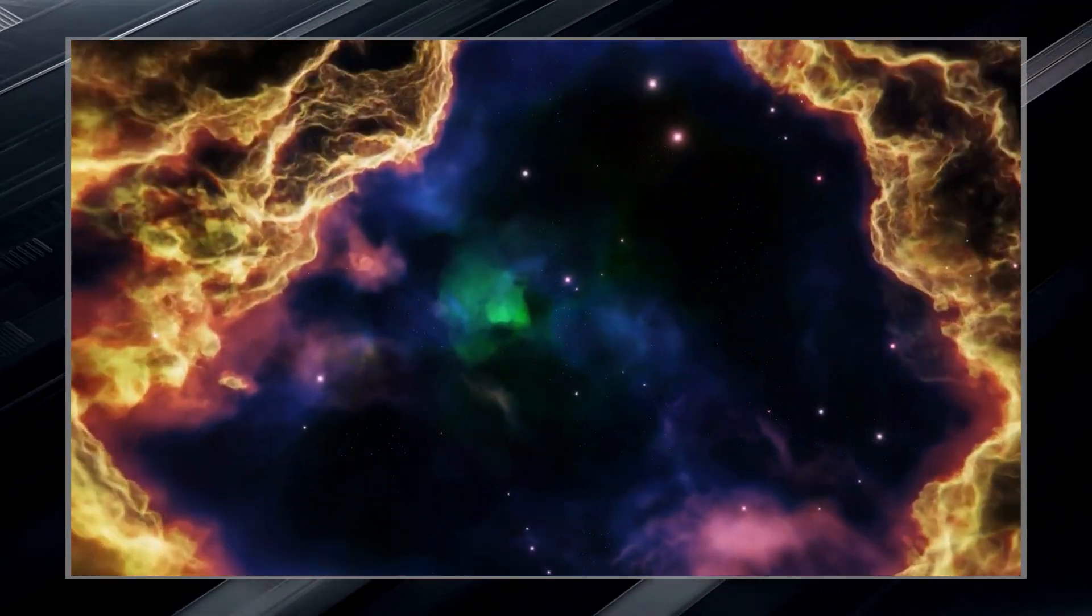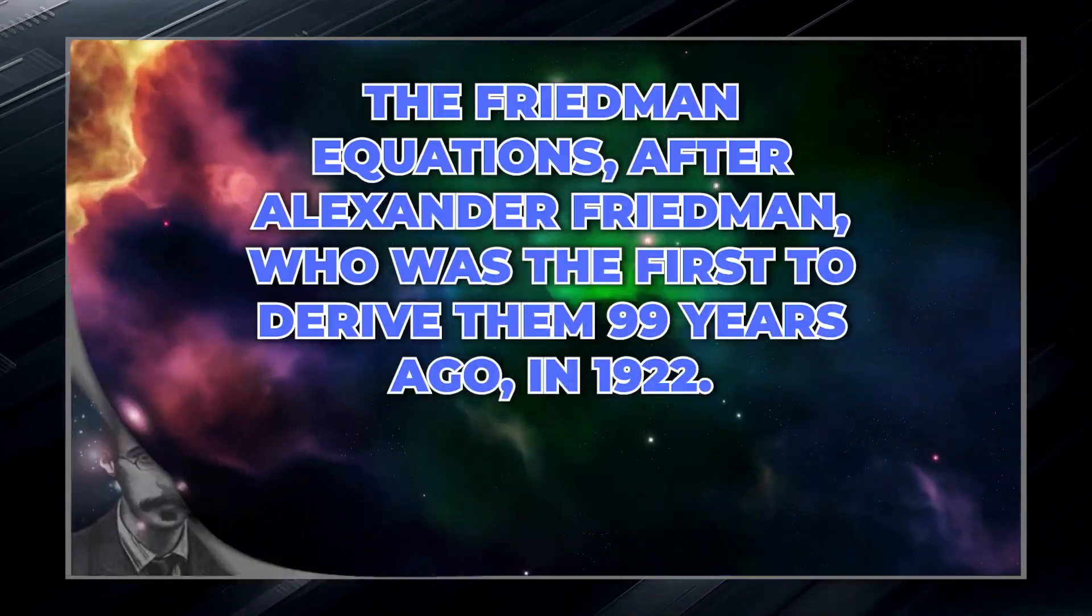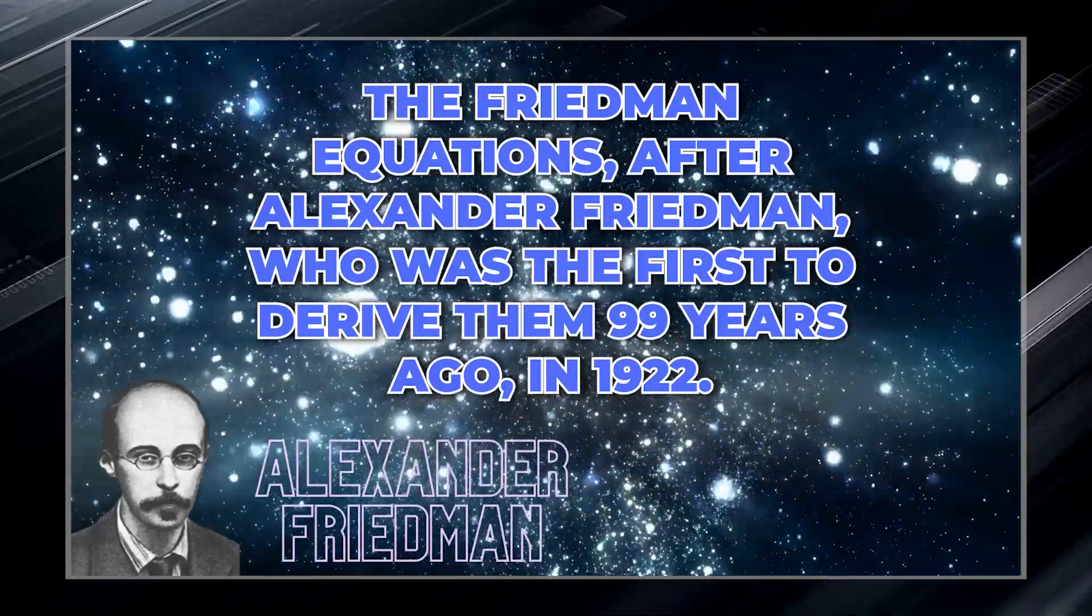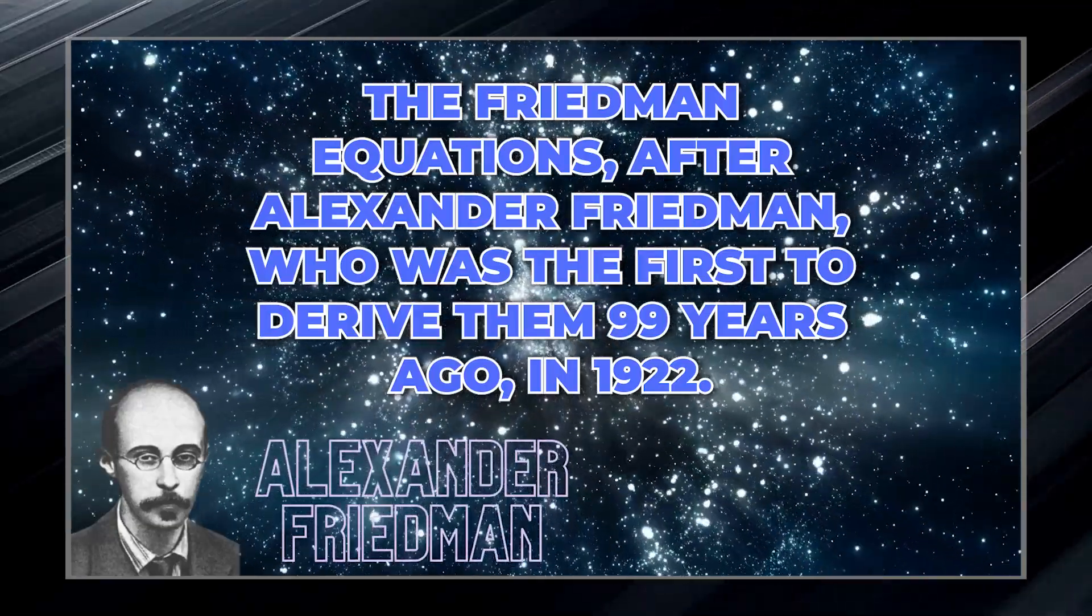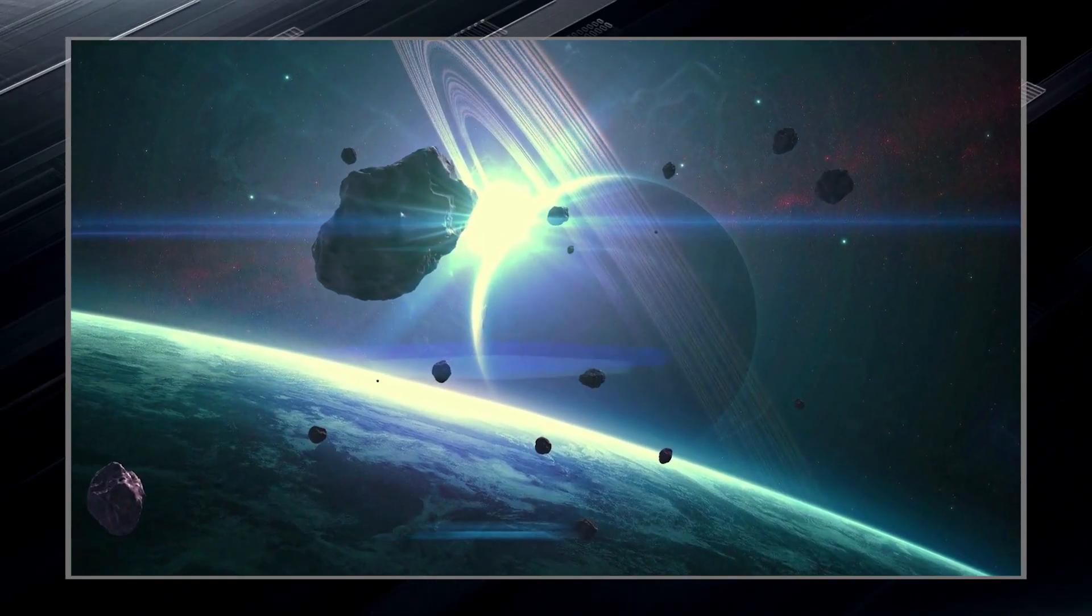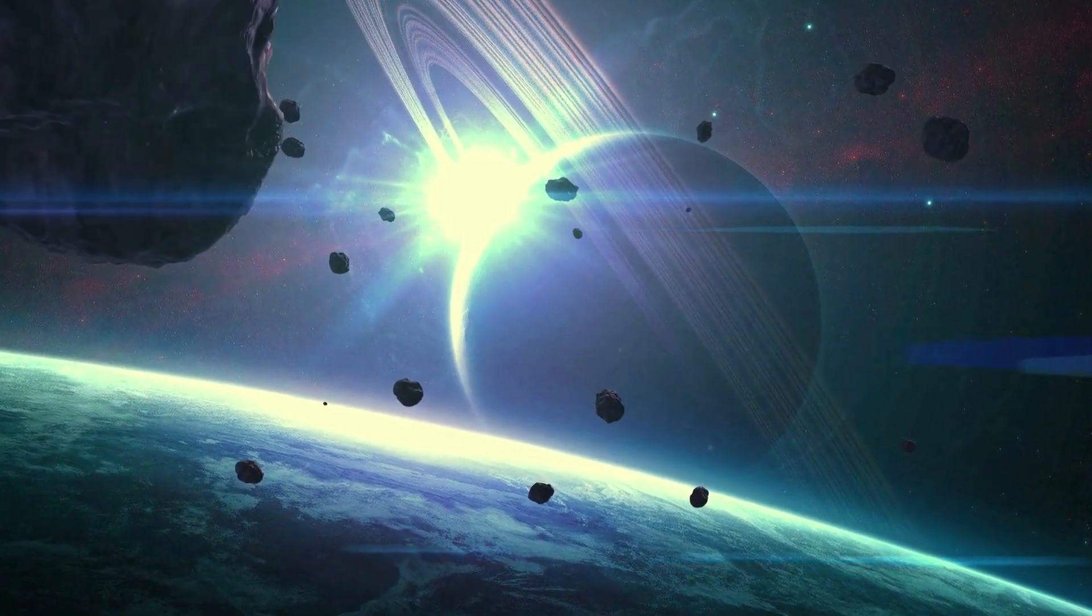The consequences of this resolution are known as the Friedmann equations, after Alexander Friedmann, who was the first to derive them 99 years ago in 1922. These equations tell us that a universe full of stuff must expand or contract in a particular way.